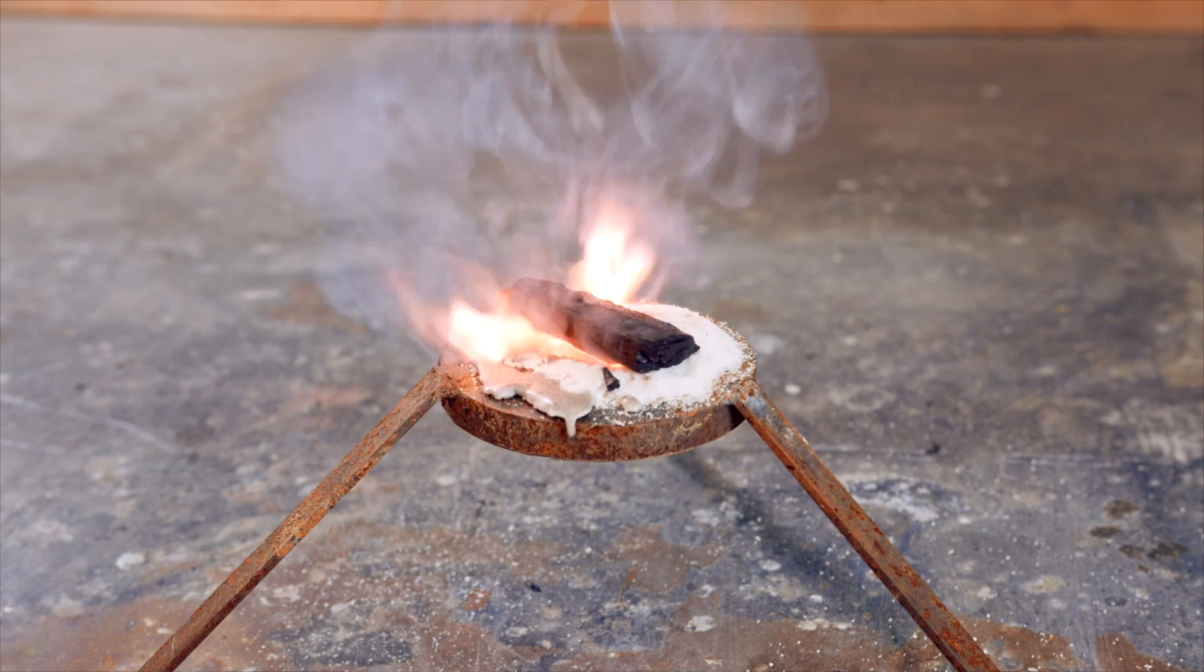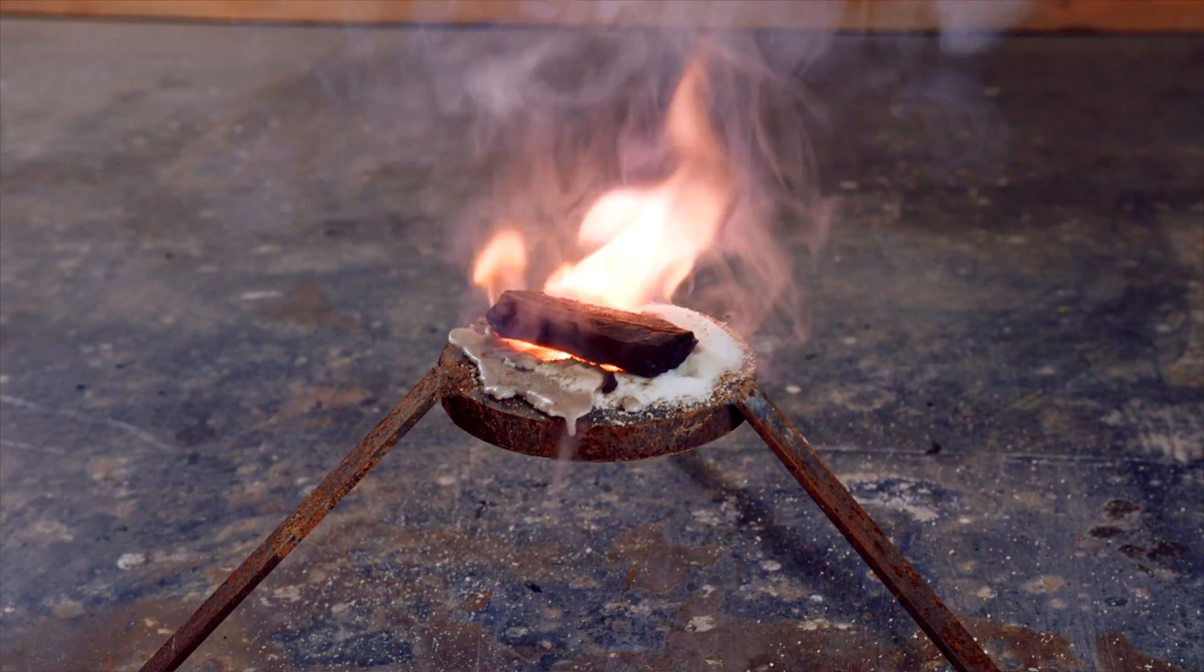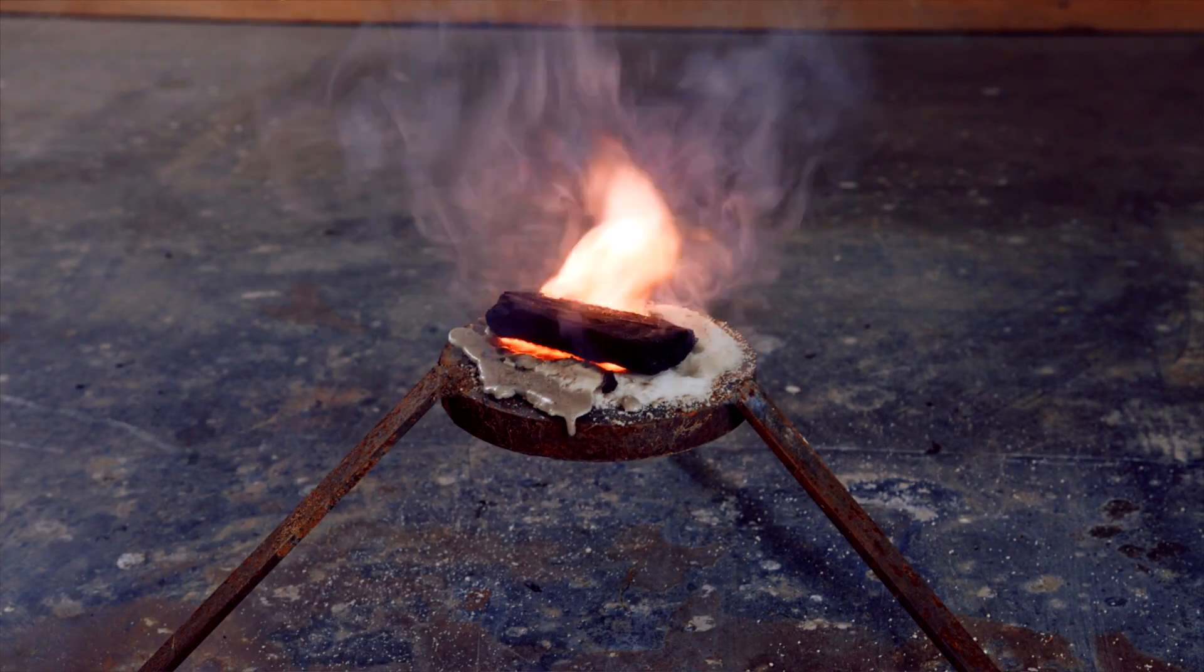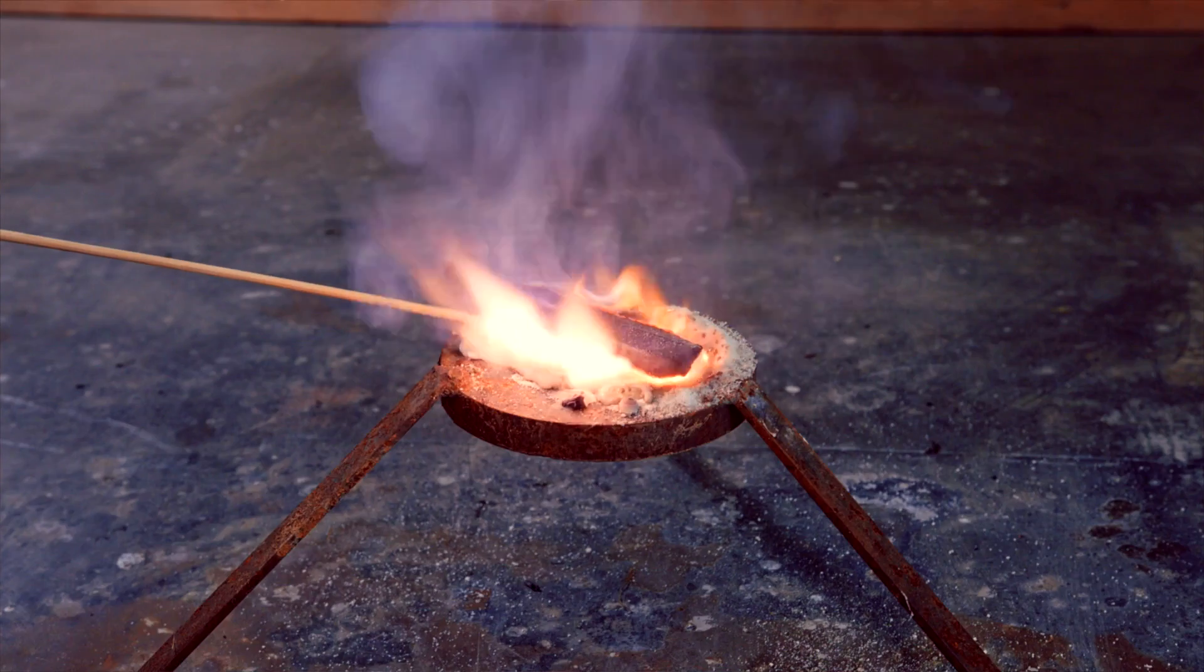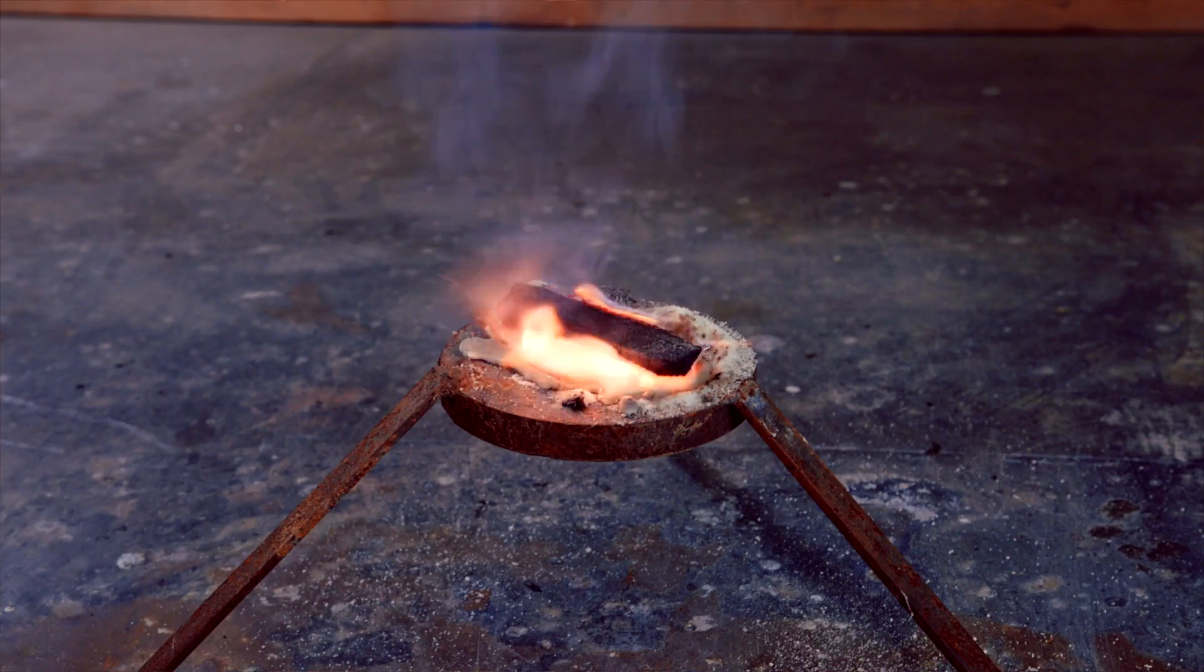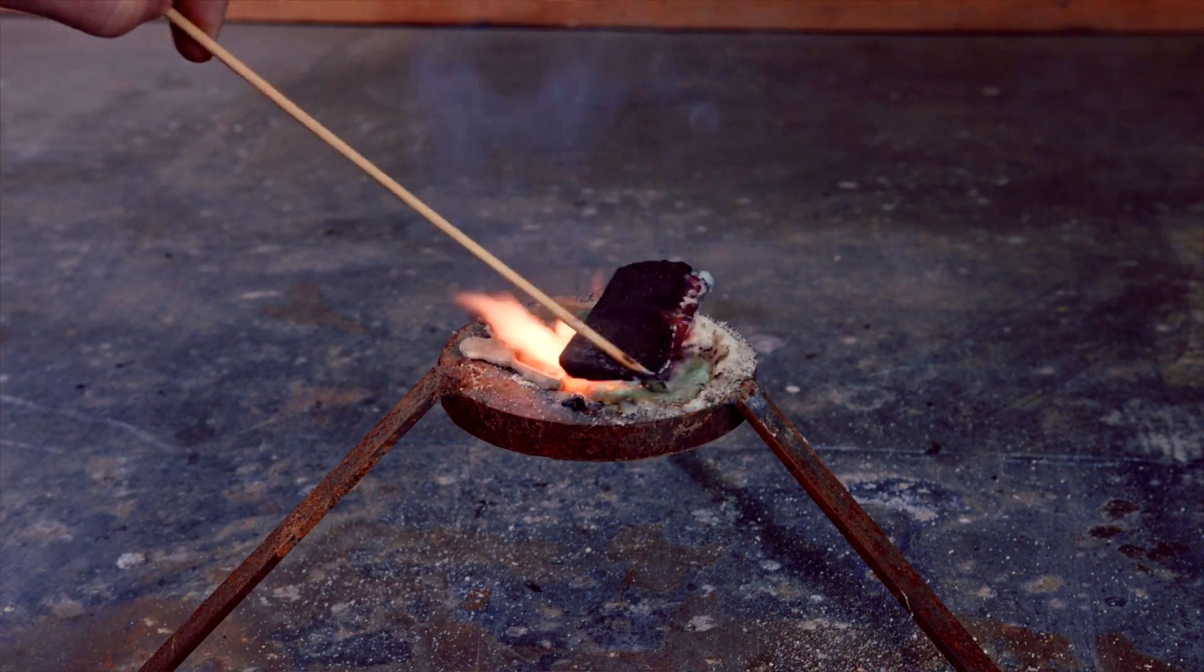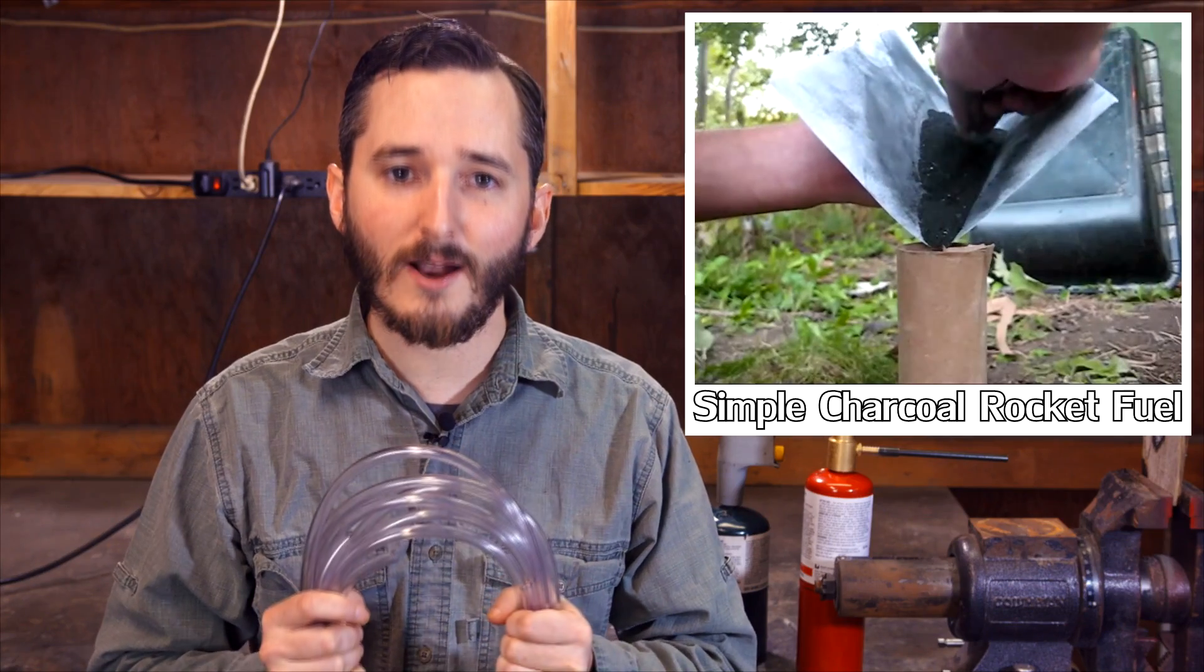In this particular demonstration, this lump of charcoal is in one solid piece, and so it's only reacting with the oxidizer where it is directly touching the pile beneath it. Suppose, however, the lump of charcoal were also crushed into a fine powder and thoroughly mixed with the oxidizer. That would be a basic rocket fuel.